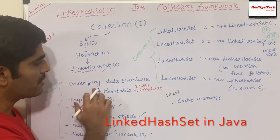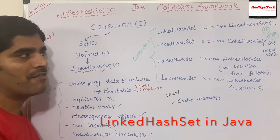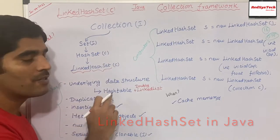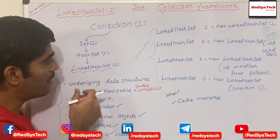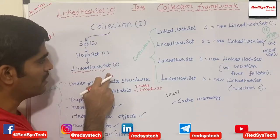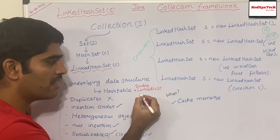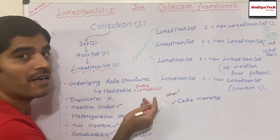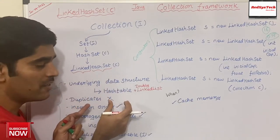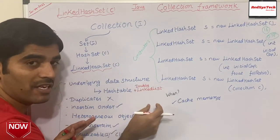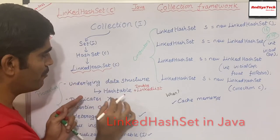The underlying data structure is a hash table and a doubly linked list. If you see our previous video where we explained HashSet, HashSet's underlying data structure is a hash table. But LinkedHashSet — from the name, the 'linked' part comes from the fact that it additionally has a doubly linked list as an underlying data structure. So LinkedHashSet has both hash table and doubly linked list as its underlying data structures. That is the reason the name starts with 'linked'.